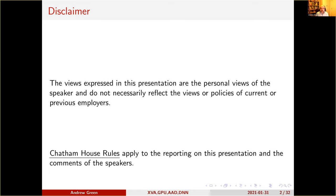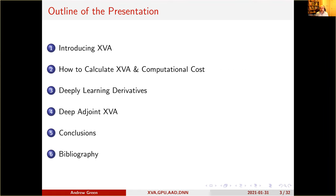What I'm going to talk about today: I'll start by introducing what we mean by XVAs or derivative valuation adjustments — what they are. Then I'll move on to how you calculate them in outline and the computational cost that goes with that. That's really just to place our use of deep learning into context. Then I'll talk about how we can use deep learning to approximate derivative valuation routines — 'deeply learning derivatives' — and finally I'll talk about deep adjoint XVA, which demonstrates how we've integrated deep learning into our XVA calculation.